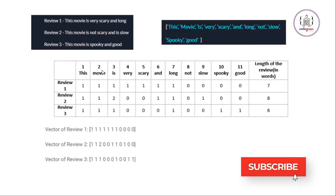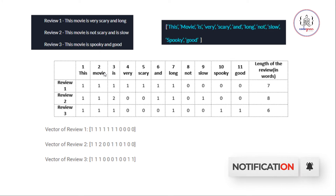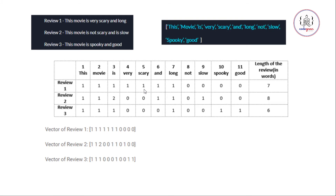For each review, we mark a word as one if it is present in that review, or zero if it is not. For Review 1, 'this', 'movie', 'is', 'very', 'scary', 'and', and 'long' are all present, so they are marked as one. 'Not', 'slow', 'spooky', and 'good' are absent from Review 1, so they are marked as zero.